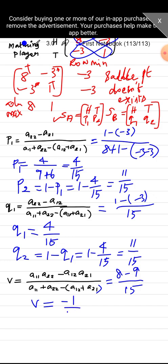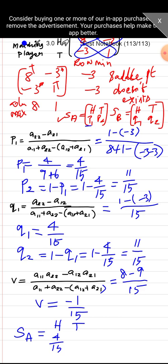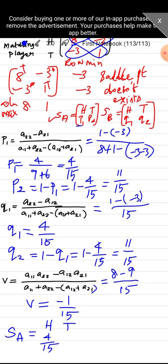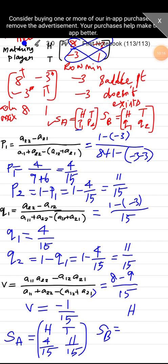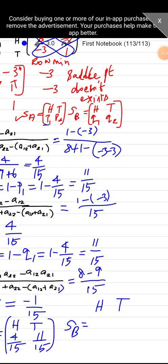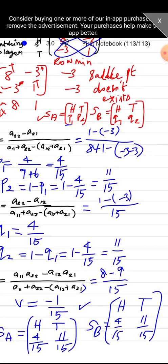The value of the game is −1/15. The optimum strategies are: S(A) = {head, tail; 4/15, 11/15} and S(B) = {head, tail; 4/15, 11/15}. This is our final answer.